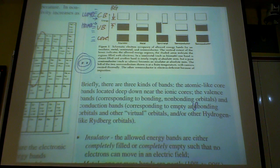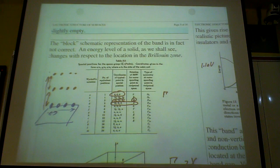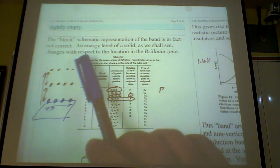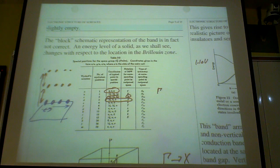And this is the concept of this Brillouin zone that we introduced earlier when we were talking about these physical structures, is that this broad schematic representation of the band is incorrect. It's, in fact, raw. It's overly simplified. An energy level of a solid, as we will see, changes depending on, with respect to the location of the Brillouin zone. In other words, which way you look.